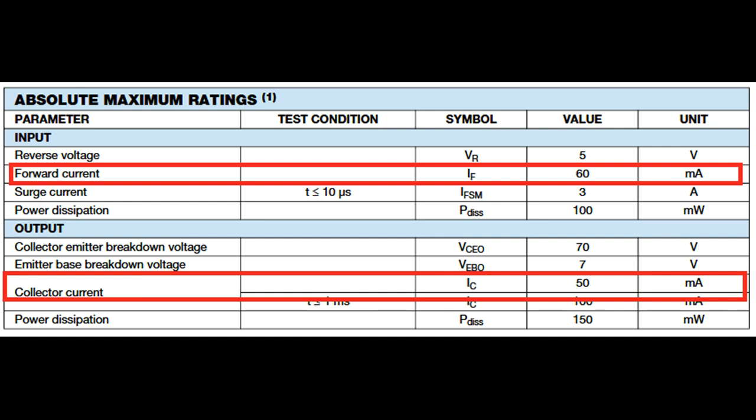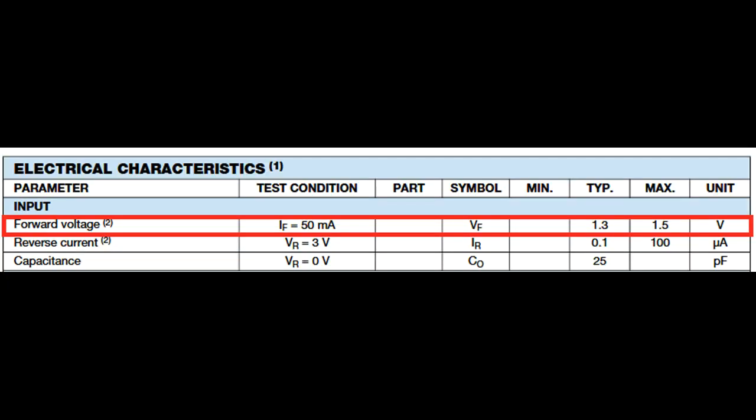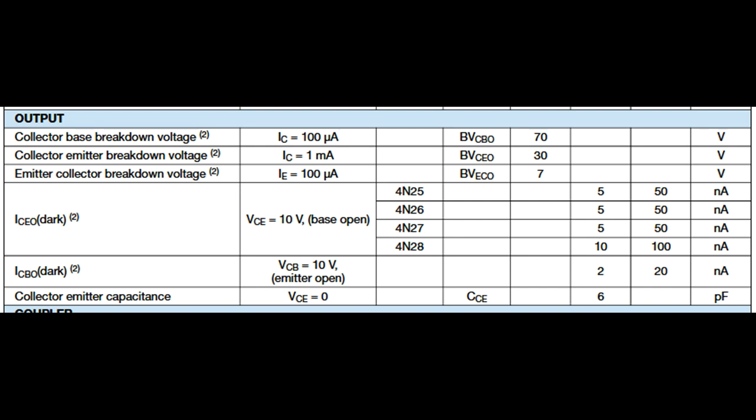A couple of the absolute maximum rating values that are worth noting are the forward current which can't be more than 60 milliamps and the collector current which can't be more than 50 milliamps. The forward voltage of the LED at 50 milliamps is 1.5 volts maximum.